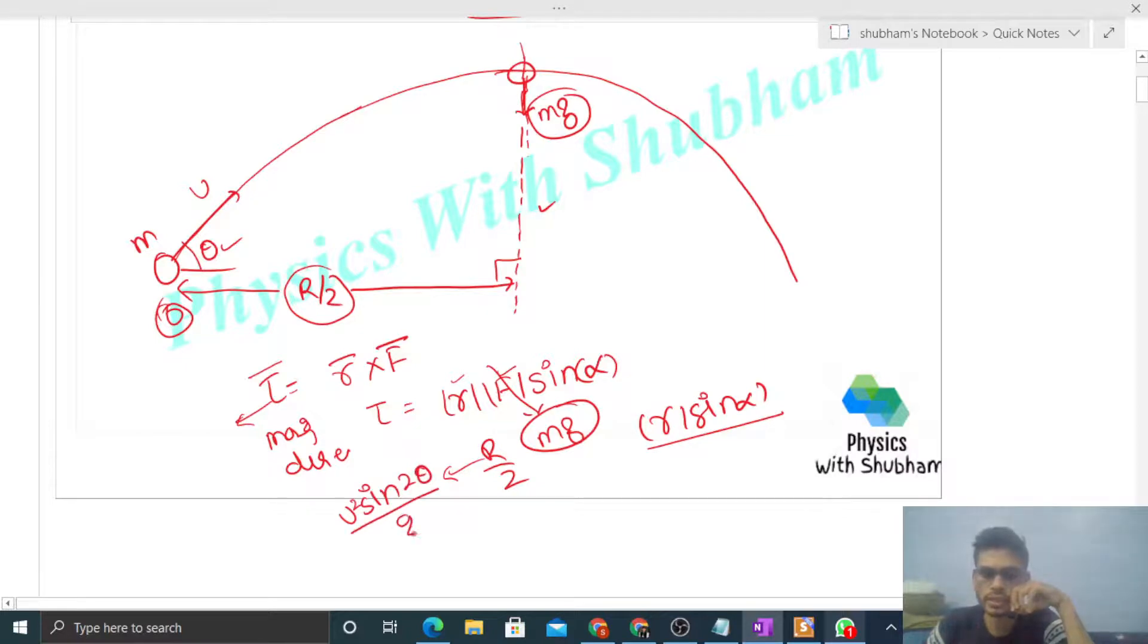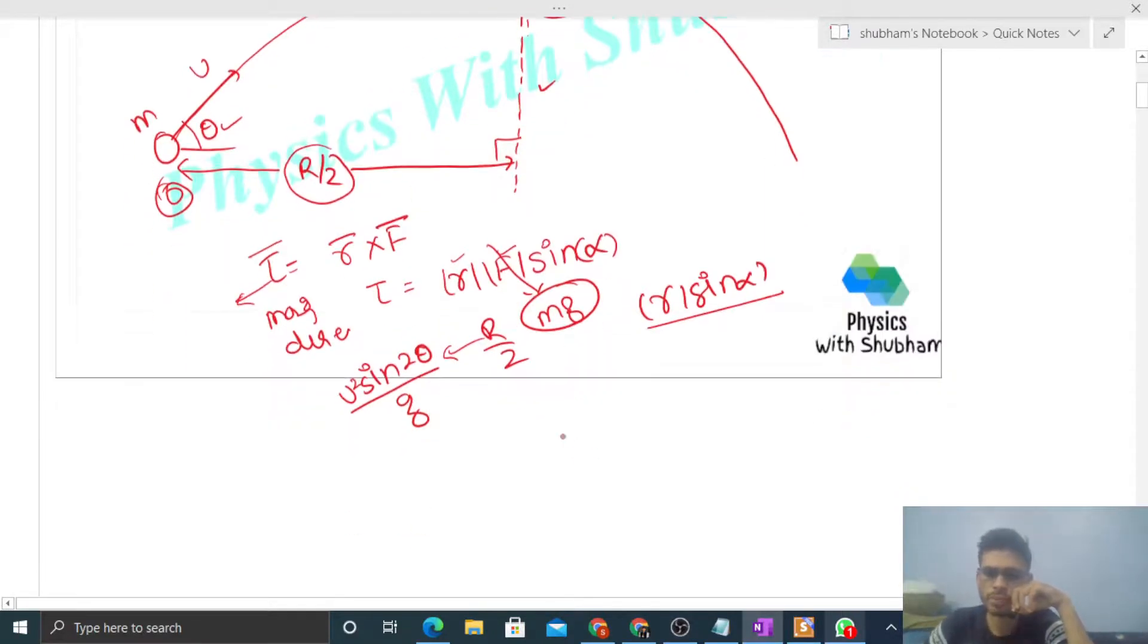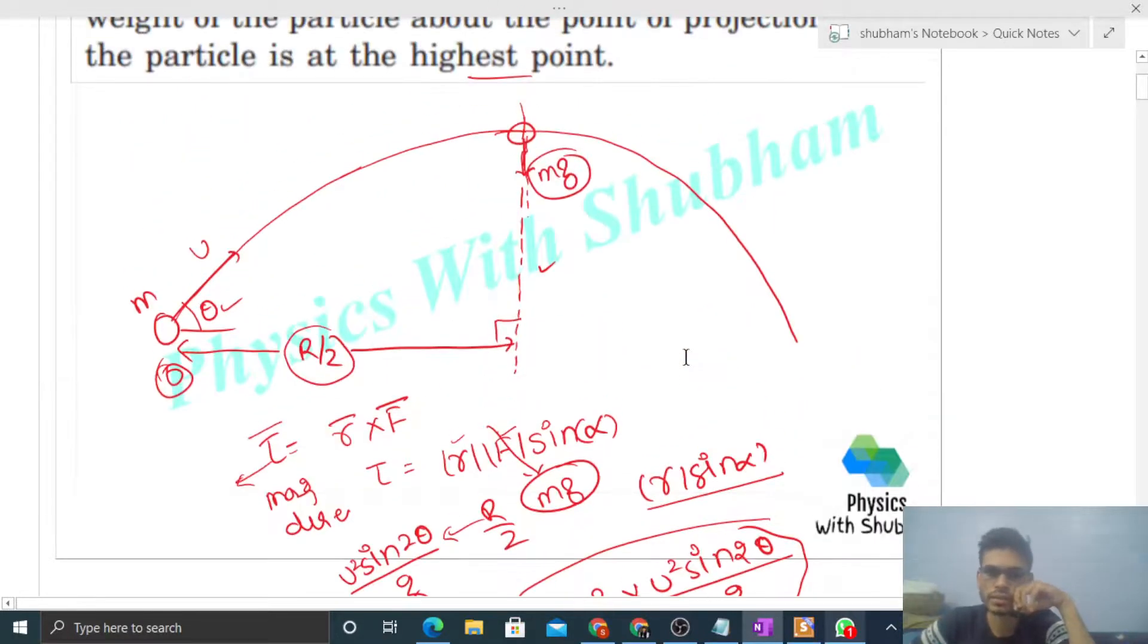R (range) equals u² sin 2θ / g. Substitute this value: torque = mg × R/2 = mg × (u² sin 2θ / g) / 2 = mu² sin 2θ / 2. This is the value of τ. If you don't want to do it this way, here's an alternative approach.